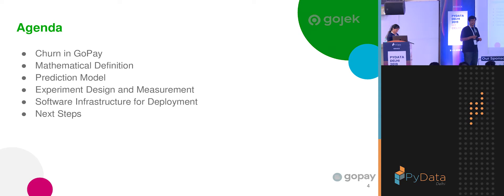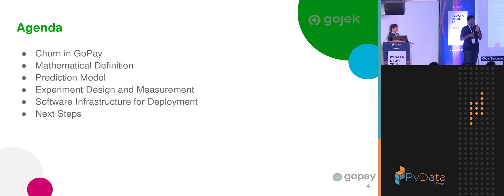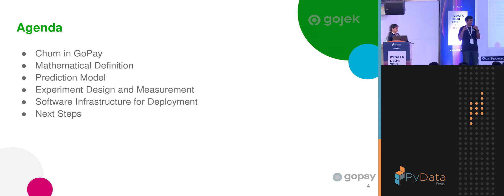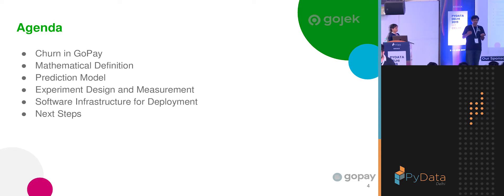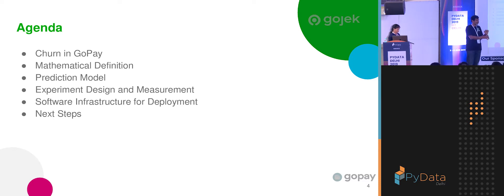So what's our agenda today? First and foremost, we're here to talk about understanding user churn in GoPay. We want to define what churn is and what it means for GoPay given our business model. How do we mathematically define it — how do we translate this business problem to a mathematical problem we can actually model? How did we go about building the model, evaluating it, running experiments, and proving that what we were doing was good? And lastly, we'll talk about how our software infrastructure works — from someone hacking around in JupyterLab to stuff actually running in production.